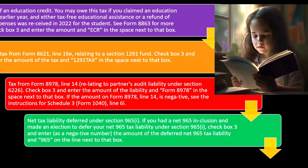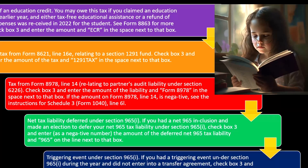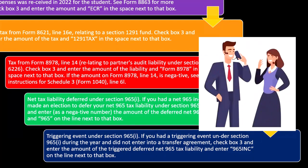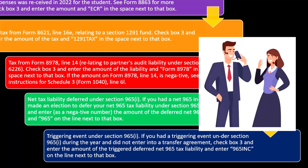Net tax liability deferred under section 965(i): if you had a net 965 inclusion and made an election to defer your net 965 tax liability under section 965(i), check box 3 and enter as a negative number. For a triggering event under section 965(i): if you had a triggering event during the year and did not enter your transfer agreement, check box 3 and enter the amount of the triggered deferred net 965 tax liability, and enter '965 inc' on the line next to that box.